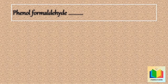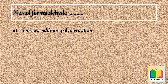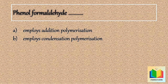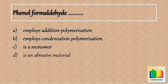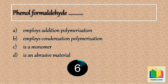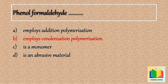Next question: Phenol formaldehyde — . Option A: Employs addition polymerization. Option B: Employs condensation polymerization. Option C: Is a monomer. Option D: Is an abrasive material. [10 seconds] So the answer is Option B: Employs condensation polymerization.